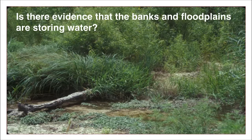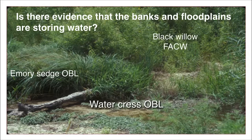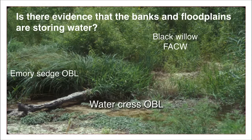Here is Emory Sedge, an obligate wetland plant, and Watercress, also an obligate. Their presence indicates the presence of permanent water. A little higher up the bank, outside of the active channel, is Black Willow, a facultative wetland plant indicating that the location is usually wet and probably has a groundwater connection, but is probably not as wet as the channel location. The number of plants at this spot indicate water is being stored in the banks and floodplain.